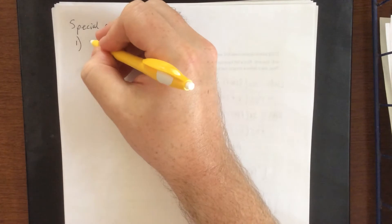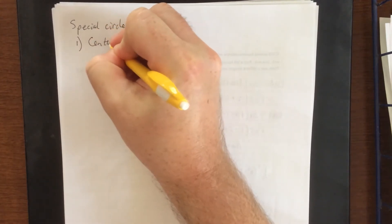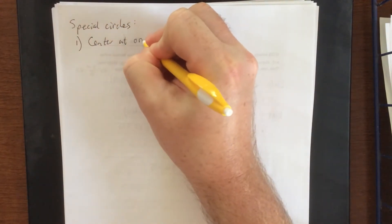So next up let's introduce a couple of special circles. The first one would be the center at the origin.